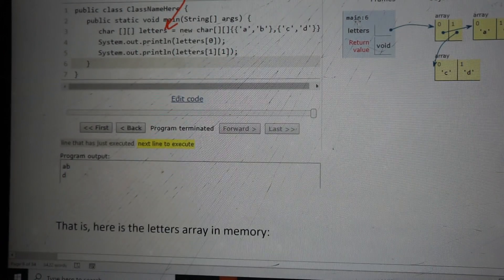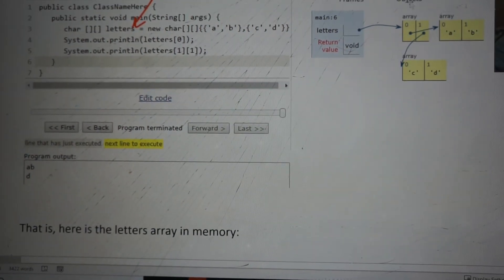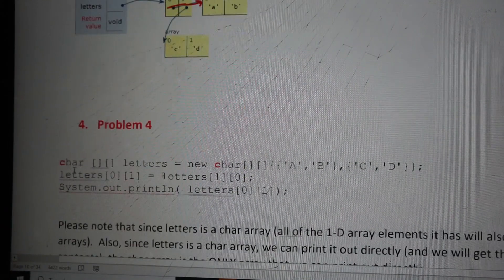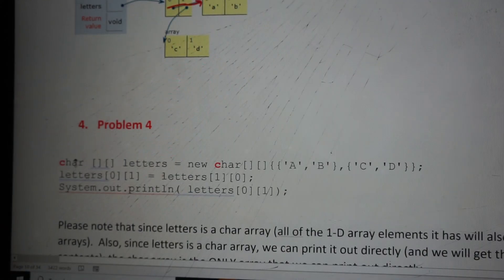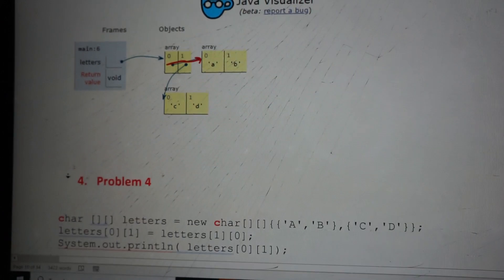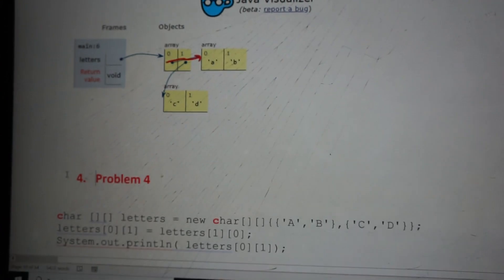So what we can see here is how it looks in memory space as well. This is letters pointing to letters[0] and letters[1]. And we finally get this output. So this is what I wanted to show for right now. Thank you for the time.